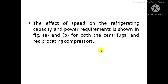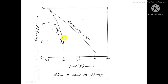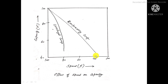The effect of speed on refrigeration capacity and power requirement is shown in figures A and B for both centrifugal and reciprocating compressors. With speed along the x-axis and refrigeration capacity along the y-axis, increasing speed from 80 to 100 increases capacity for both compressor types. However, this effect is more sensitive in centrifugal compressors — a small change in speed increases refrigeration capacity much more quickly — whereas reciprocating compressors require a larger change in speed for a similar increase in capacity.